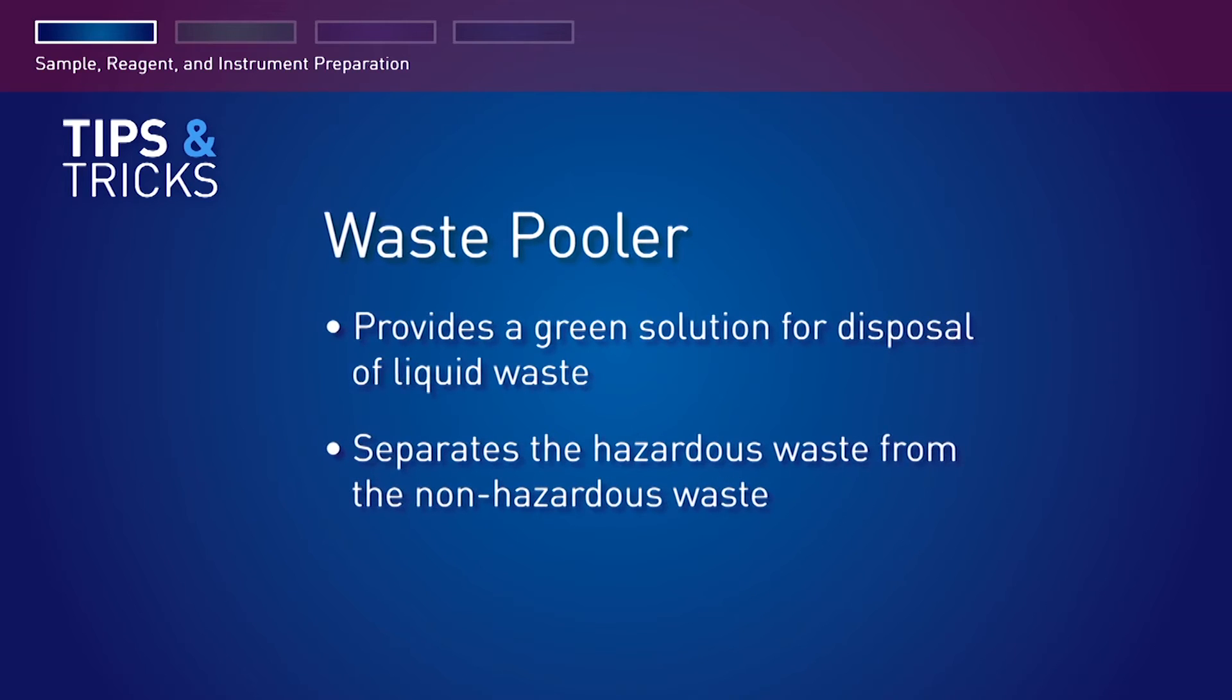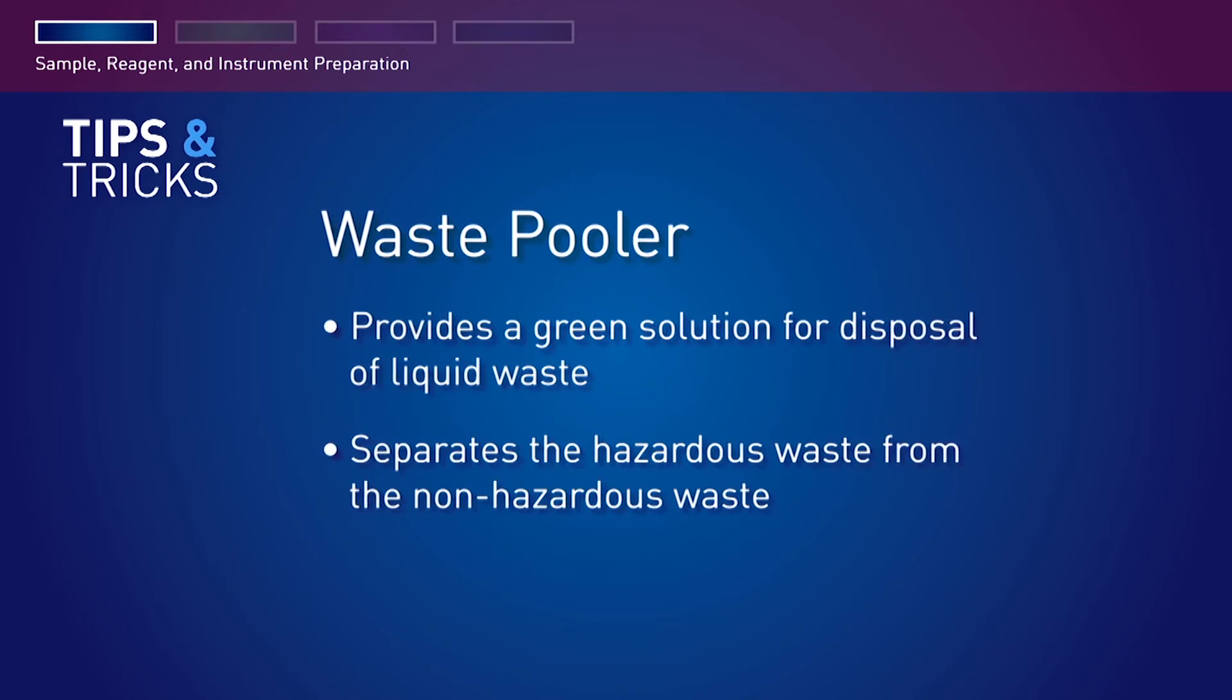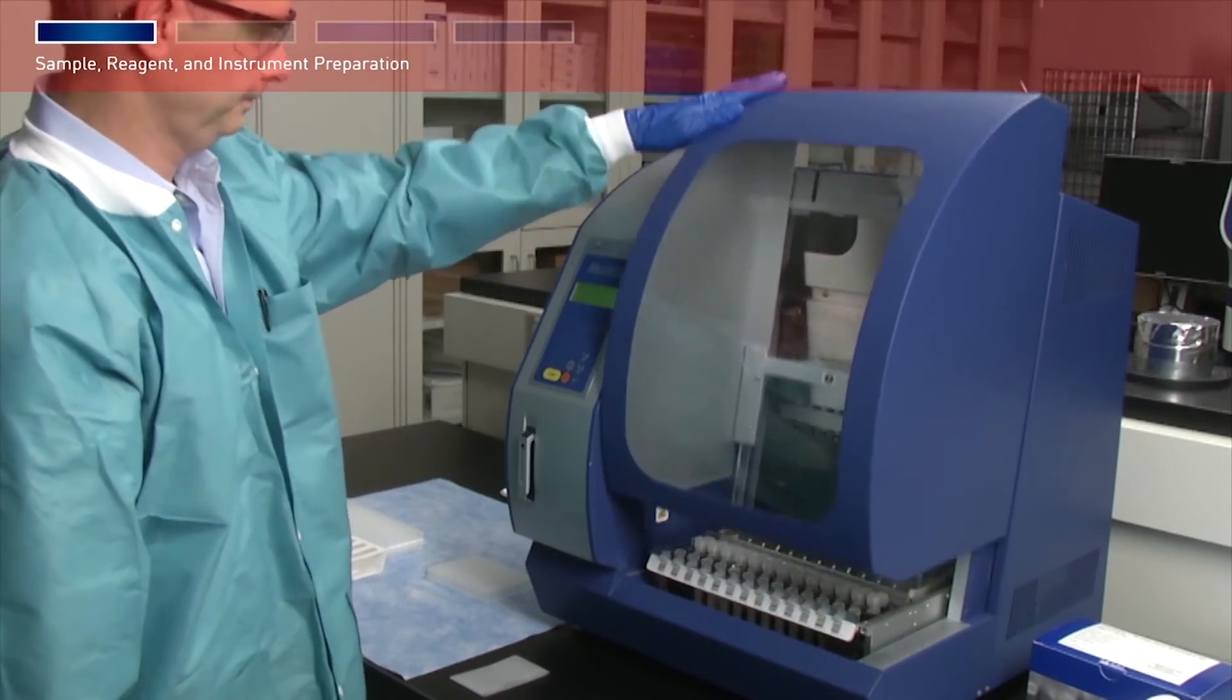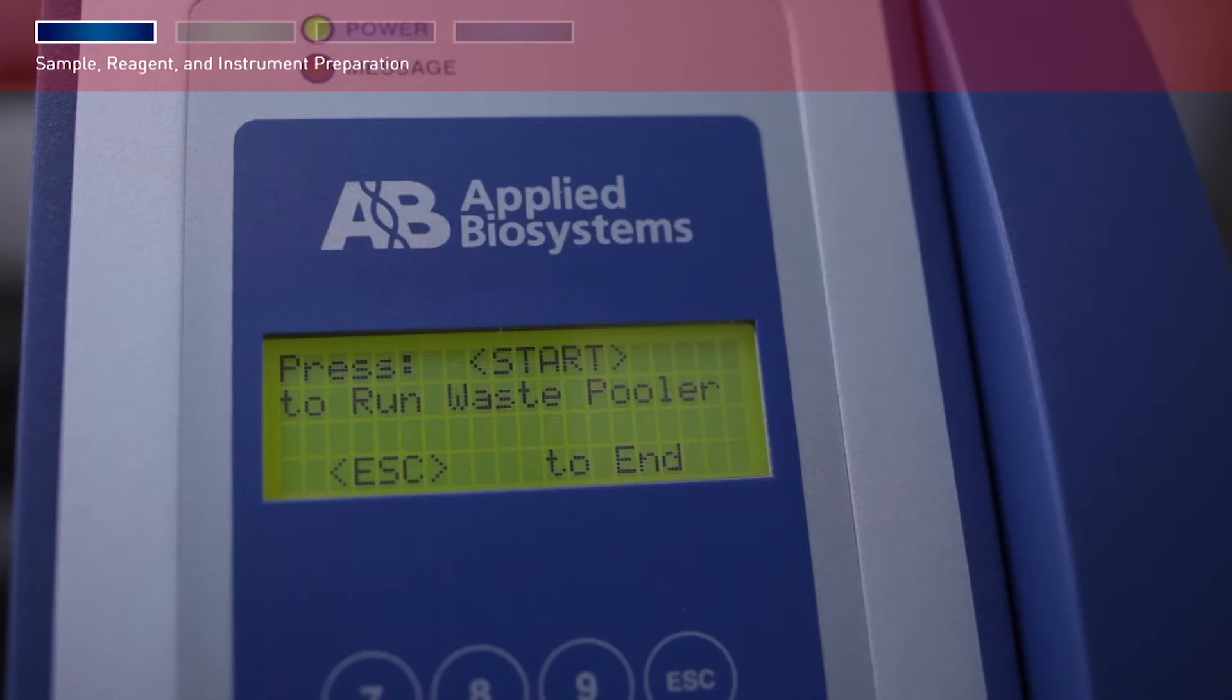The waste pooler provides a green solution for disposal of liquid waste generated from an Automate Express run. The waste pooler separates the hazardous waste from the non-hazardous waste and consolidates it, thereby enabling a safer and easier way to dispose the spent reagents. If you run the waste pooler, close the instrument door then press Start, or press Escape to skip the waste pooler and return to the main menu.